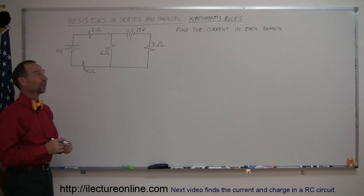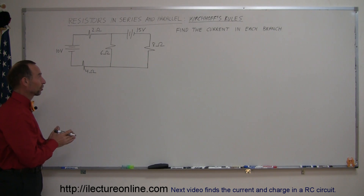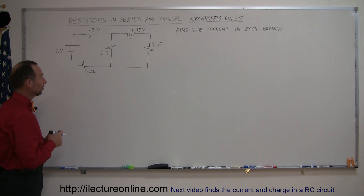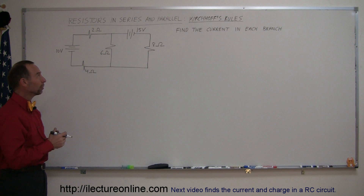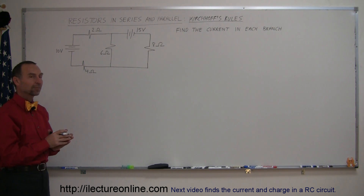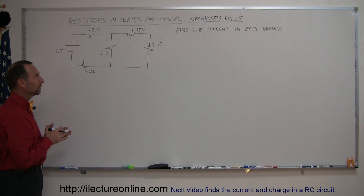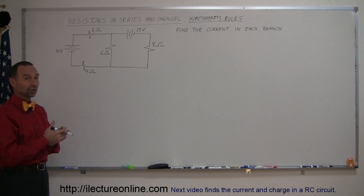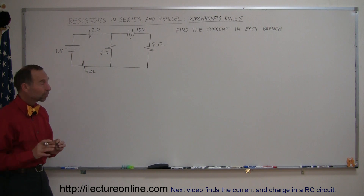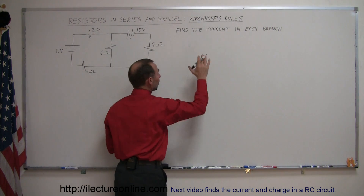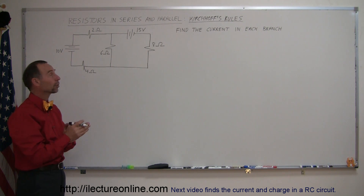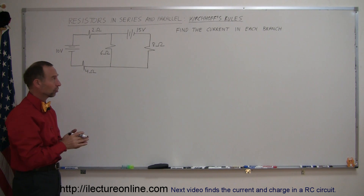Welcome to iLecture Online. Here's a very special type of direct current circuit. It does have resistors in parallel and in series, but it has multiple battery sources on multiple branches. This becomes a very complicated type of problem that in our conventional way of solving circuit problems you probably couldn't solve. So we're going to use something called Kirchhoff's rules to solve the problem where you're supposed to find the current in each of the branches.